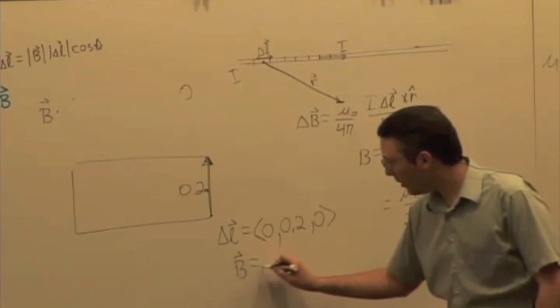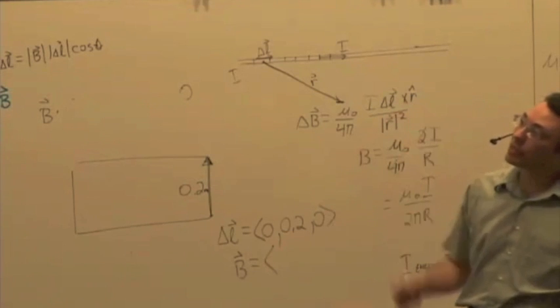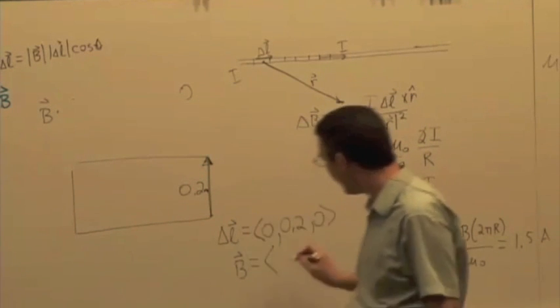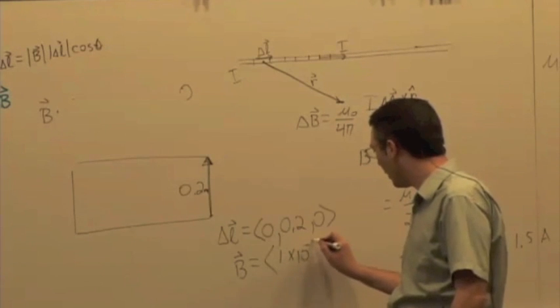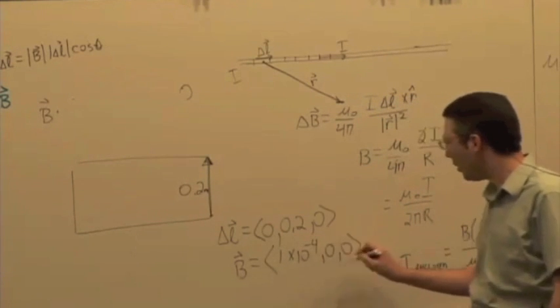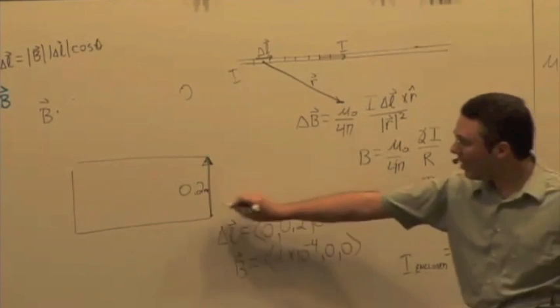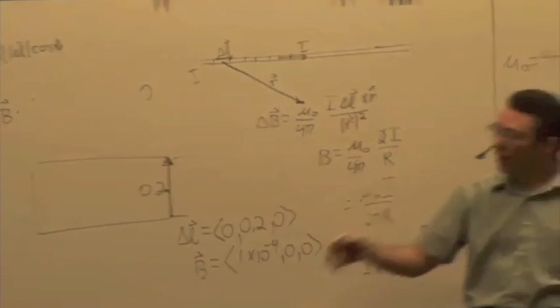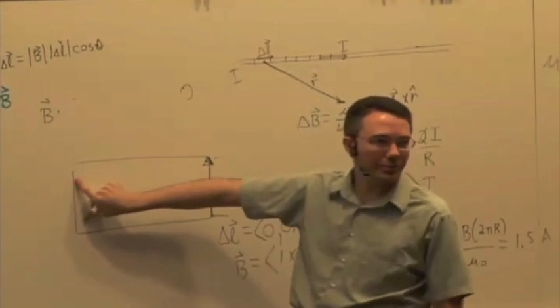The magnetic field is in the positive x direction, right? So we have B2 is 1 times 10 to the minus 4, 0, 0. When I take the B dot DL on just that segment of the path, what am I going to get? 0. And therefore, what am I going to get over here, too? 0.